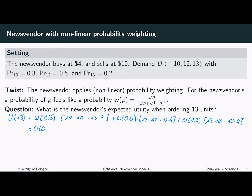So let us simplify this expression. This is w of 0.3 times 100 minus 52, which is 48, plus w of 0.5 times 120 minus 52, which is 68. And finally, w of 0.2 times 130 minus 52, which is 78.